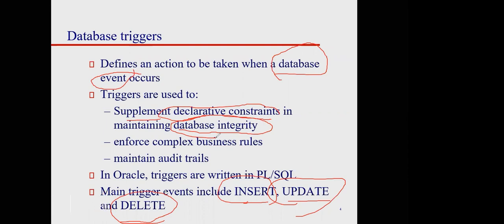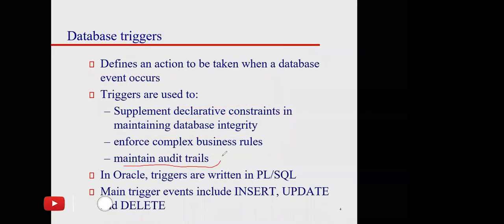Triggers help to enforce complex business rules. Some rules we can implement through declarative constraints like unique, not null, foreign key, and primary key, but sometimes we have complex business rules where we take help of triggers. Additionally, triggers are used to maintain an audit trail — to check previous transactions for any errors, especially in accounting.